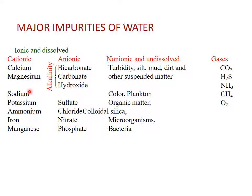Non-ionic and undissolved impurities also include microorganisms, bacteria, silica, sand, etc. Ionic and dissolved impurities may be cationic or anionic. Cations include calcium, magnesium, sodium, potassium, ammonium, iron, and manganese. These metals may be present in the form of bicarbonates, carbonates, hydroxides, sulfates, chlorides, nitrates, or phosphates.